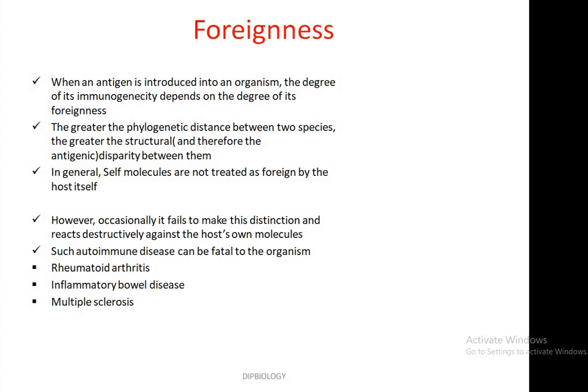For example, if we think about humans versus fish: substances coming from fish origin are treated by the human body as strongly foreign particles. But substances coming from a species with less phylogenetic distance are treated as less antigenic. In general, self molecules are not treated as foreign by the host itself. However, occasionally the immune system fails to make these distinctions and reacts destructively against the host's own molecules.